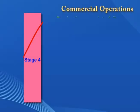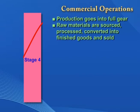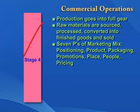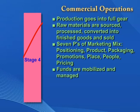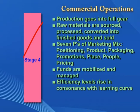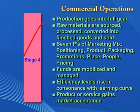In the commercial stage, production goes into full gear. Raw materials are sourced, processed, and converted into finished goods, and then sold. The market for the enterprise products or services is exploited to the seven P's of the marketing mix: positioning, product offering, packaging, promotions, place, people, and pricing. Funds are mobilized and managed according to operational needs and working capital flows. The efficiency levels of the workforce eventually rise in consonance with their learning curve as more outputs are extracted from the inputs injected. The enterprise product or service gains greater market acceptance at this stage.